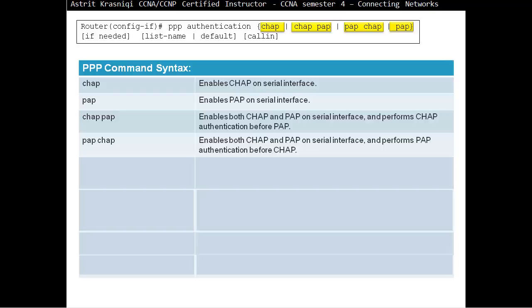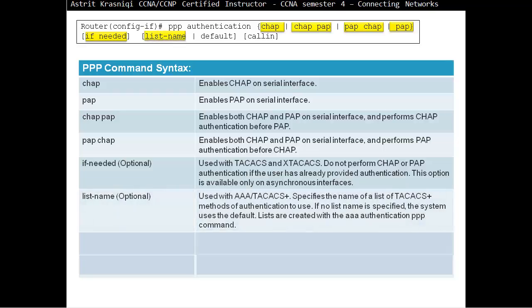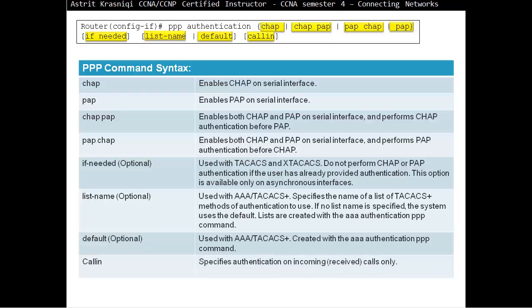The 'if-needed' option with TACACS+ means: do not perform CHAP or PAP authentication if the user has already been authenticated. This option is available only on asynchronous interfaces. The list-name option is used with AAA or TACACS+ to specify the name of the list of authentication methods to use. If no list name is specified, the system uses the default. Lists are created with the AAA authentication PPP command. The 'callin' option specifies authentication on incoming calls only.